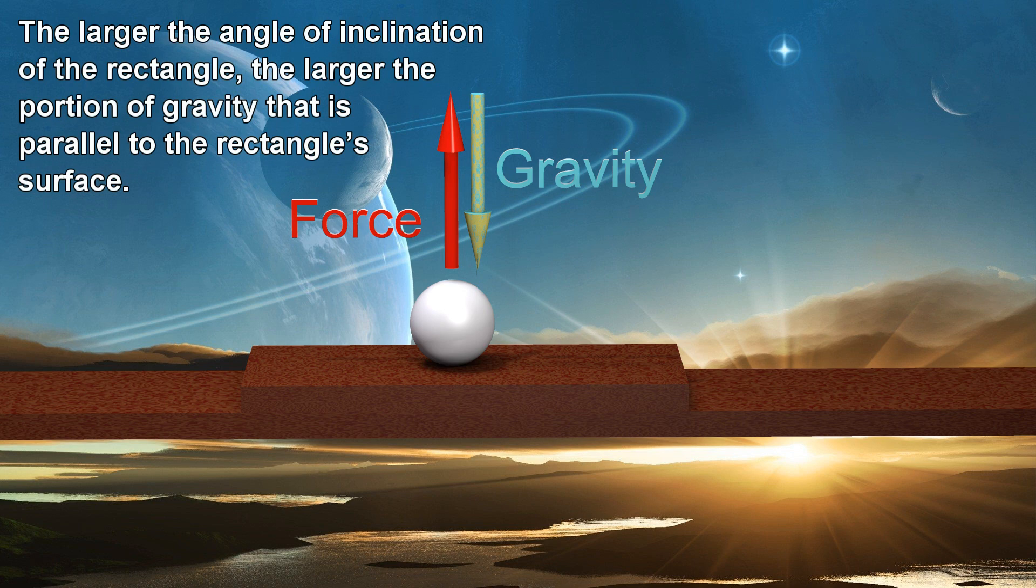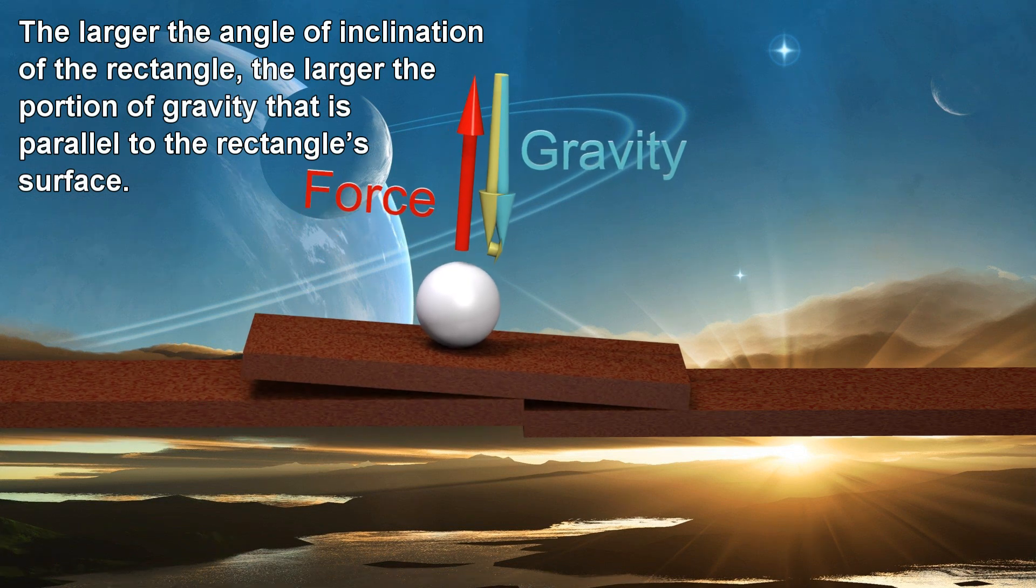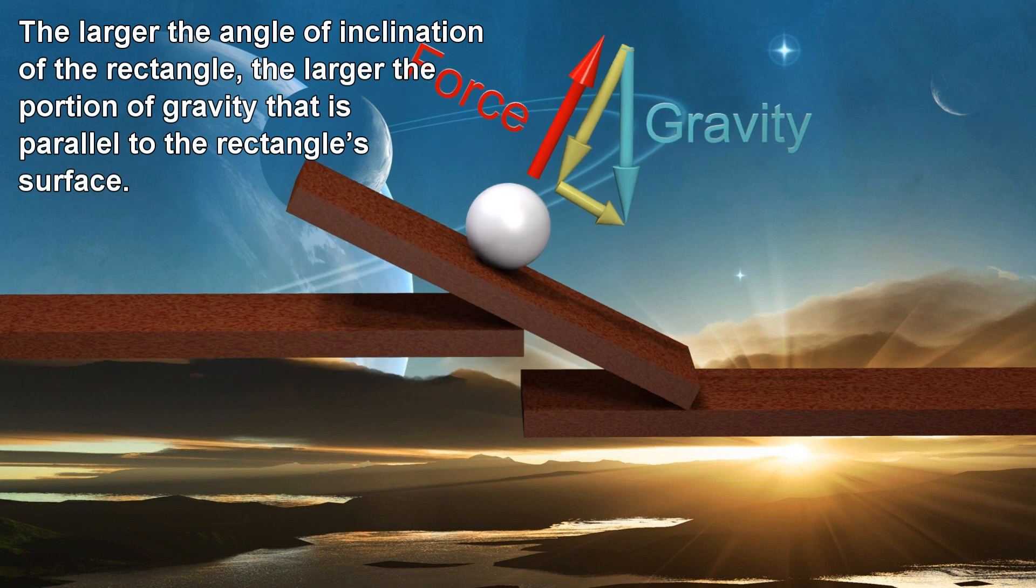The larger the angle of inclination of the rectangle, the larger the portion of gravity that is parallel to the rectangle's surface.